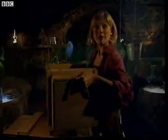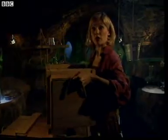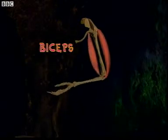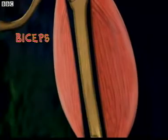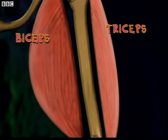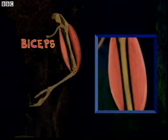Now, you can feel two of these working together when you bend and straighten your arm. You can see it with this model. To bend your arm, the biceps contracts — it gets shorter. You can see it bulge and harden. The triceps relaxes. As a result, the biceps pulls the bones together and the arm bends.